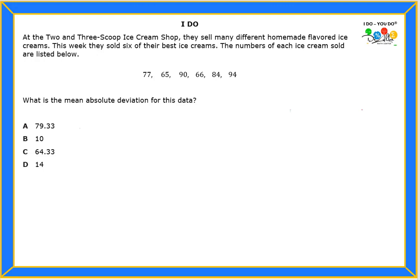Hello students, let's read the problem. It says at the two and three scoop ice cream shop they sell many different homemade flavor ice creams. This week they sold six of their best ice creams. The number of each ice cream sold are listed below. What is the mean absolute deviation for this data?